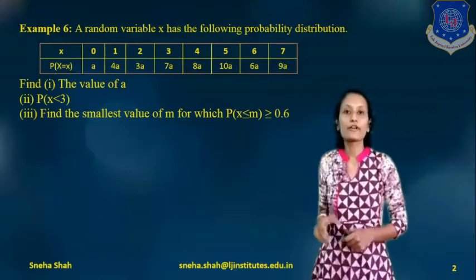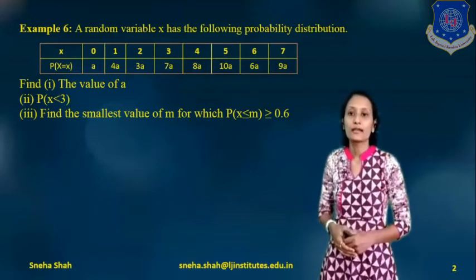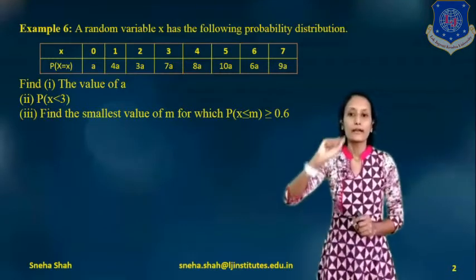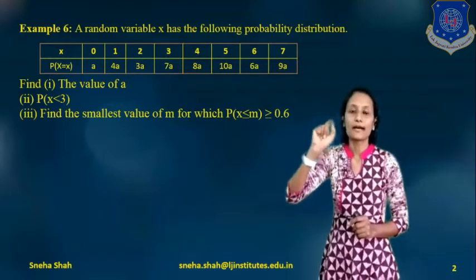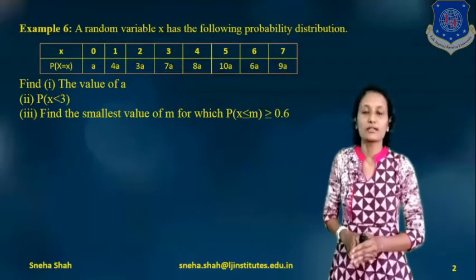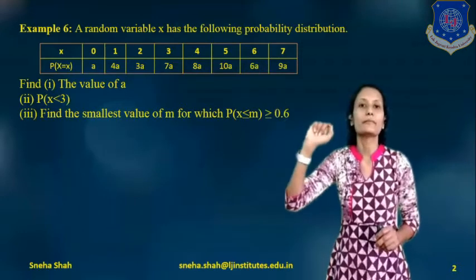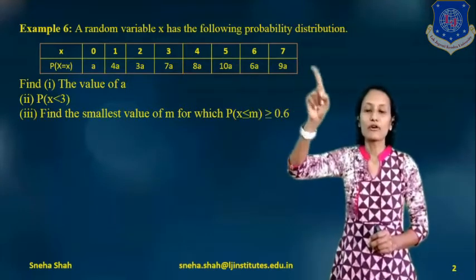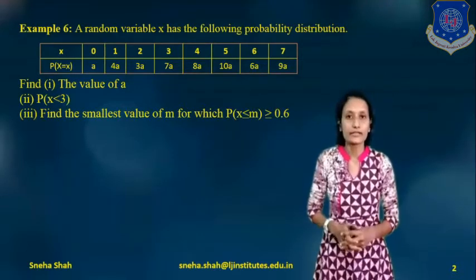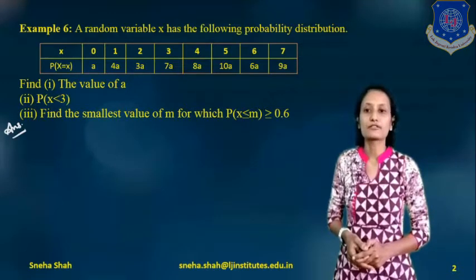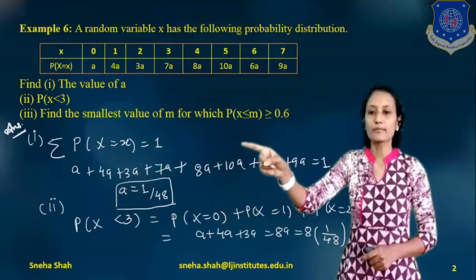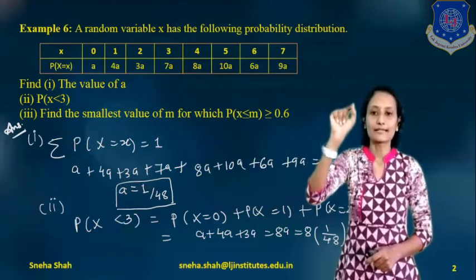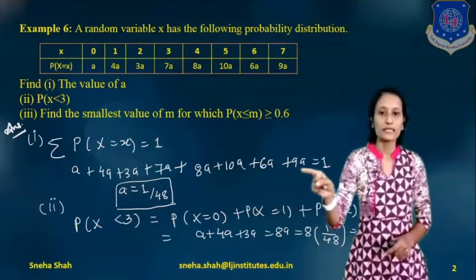Starting with the first term: to find the value of a, we apply the conditions of probability mass function. The first condition is all probabilities must be greater than 0. The second condition is the summation of all probabilities equals 1. Taking this second condition: summation of all probabilities equals a + 4a + 3a + 7a + 8a + 10a + 6a + 9a, and this sum equals 1.